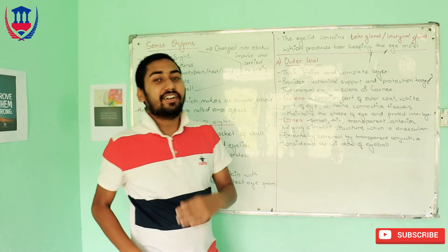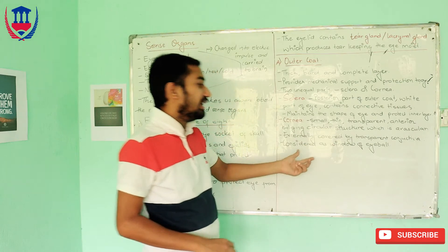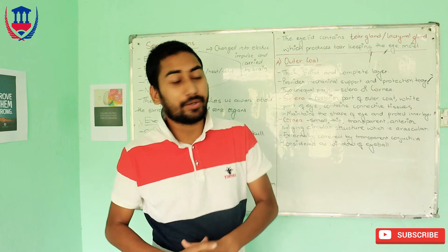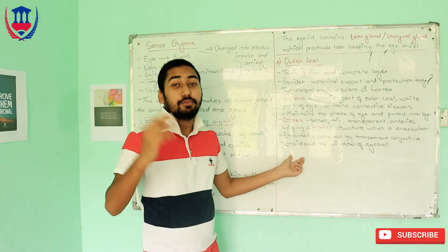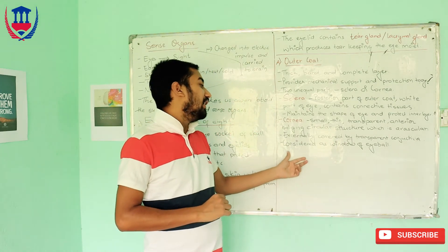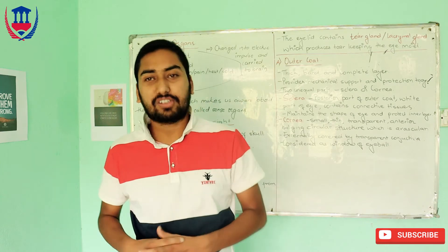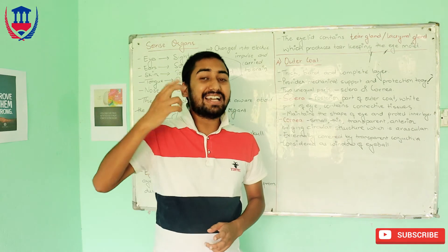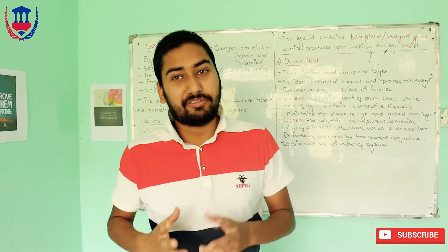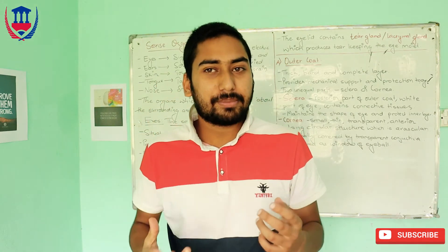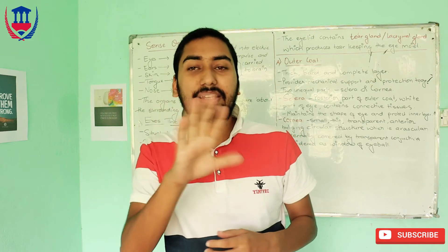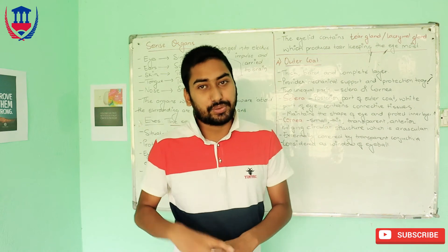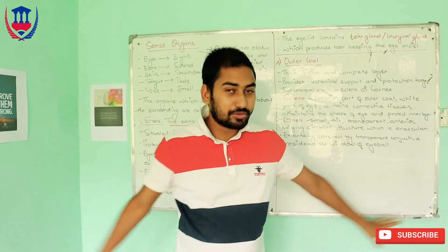The conjunctiva is a thin, transparent layer covering the cornea. It is very important for protecting the cornea. Light enters through the cornea into the interior part of the eye — the cornea allows light to pass through as it is transparent.